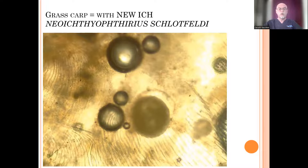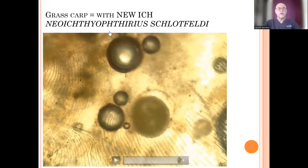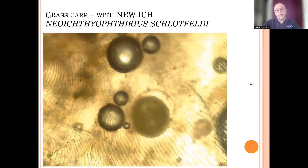Here is another white spot, and this is what we call the new Ichthyophthirius, or Neo Ichthyophthirius schlottfeldei — a nice name, identified already many years ago and unfortunately becoming more common in our aquarium industry and aquarium hobby.